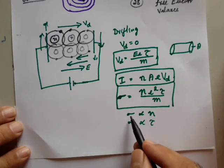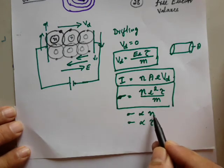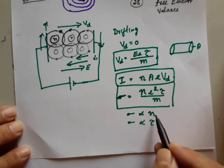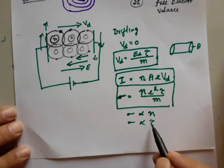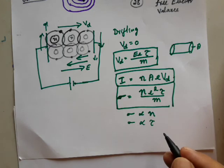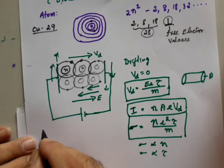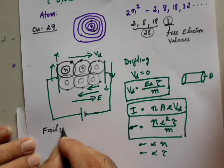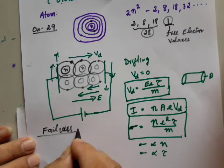We just saw that sigma, the electrical conductivity, is directly proportional to the number of electrons per unit volume — the electron concentration — and depends on the relaxation time. Now let us try to understand what are exactly the failures of the classical free electron theory.